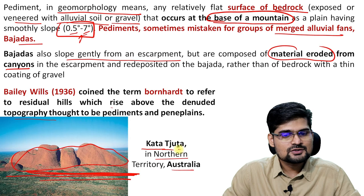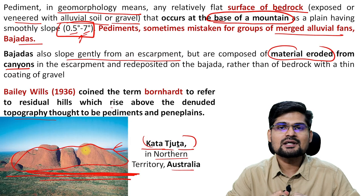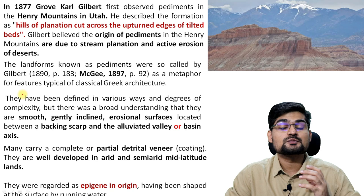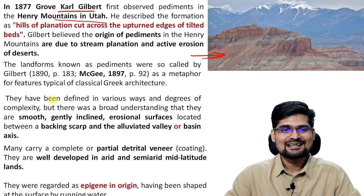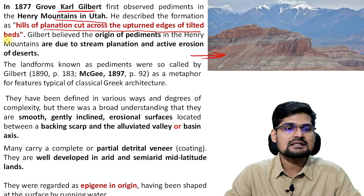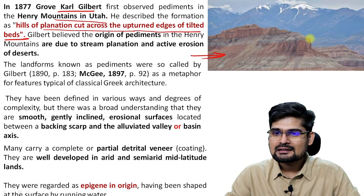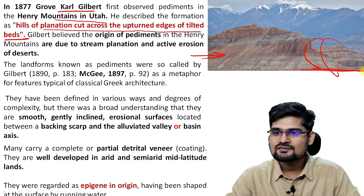Now let's further understand about pediment development. One of the great stalwarts of geomorphology whose principles we have already discussed — G.K. Gilbert — first observed these pediments in the Henry Mountains in Utah. He described hills of planation cut across upturned edges of tilted beds. Earlier the mountain must have been till a certain point; after erosion, the surface remaining is the pediment — that is pedimentation. He saw this happening in the Henry Mountains.